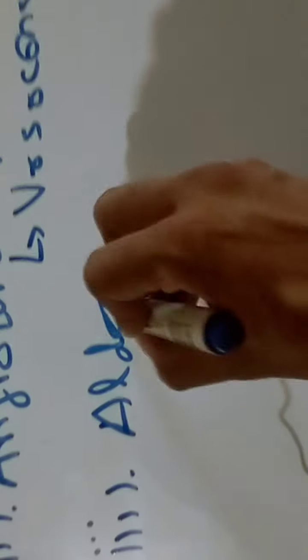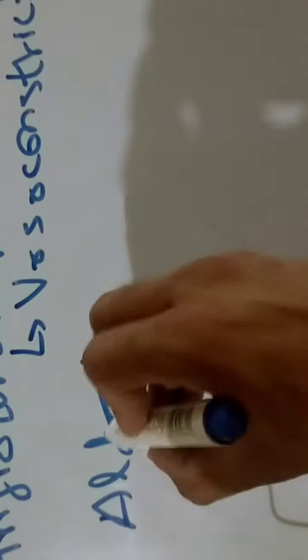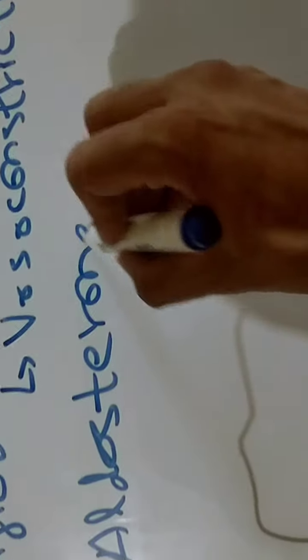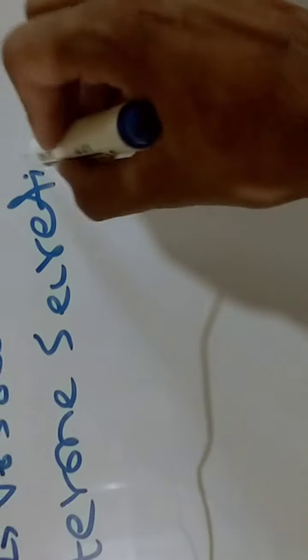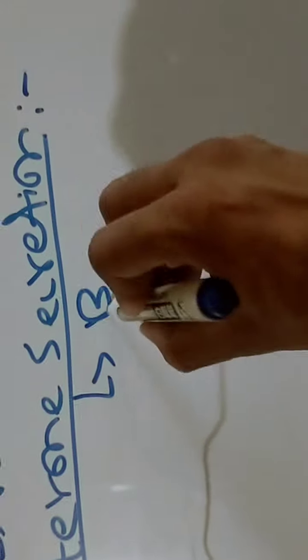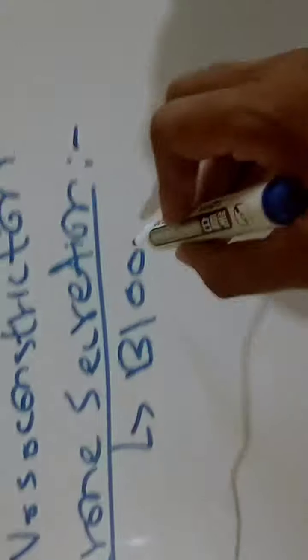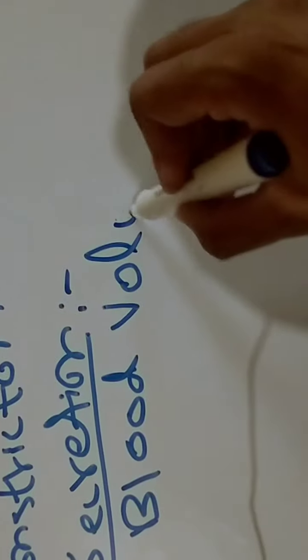Number three is aldosterone secretion. Aldosterone secretion actually occurs in order to conserve the blood volume. More aldosterone is secreted in the case of non-progressive shock to restore or conserve blood volume. It draws back water from the kidneys towards the blood so that blood volume is maintained.